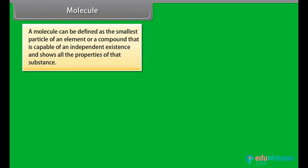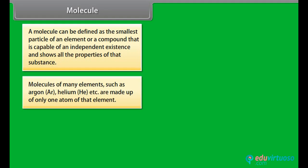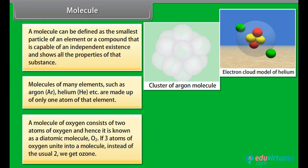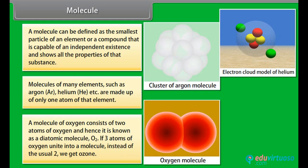A molecule can be defined as the smallest particle of an element or a compound that is capable of an independent existence and shows all the properties of that substance. Molecules of many elements such as Argon, Ar, Helium, etc. are made up of only one atom of that element. A molecule of Oxygen consists of two atoms of Oxygen and hence it is known as a diatomic molecule, O2.